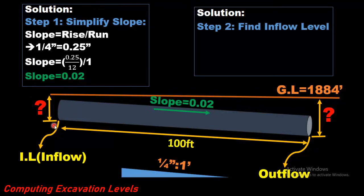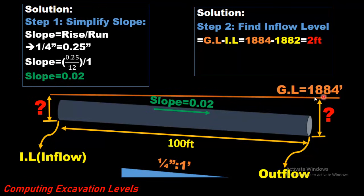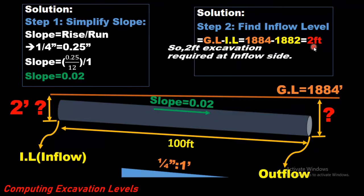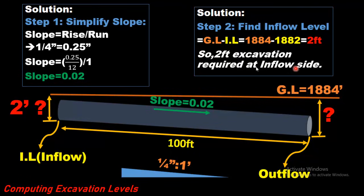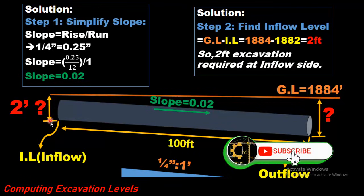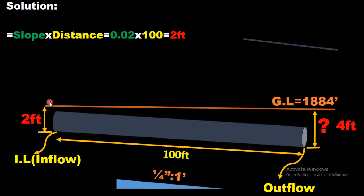Step 2 — Find the inflow excavation level. The invert level is already given. Excavation depth equals ground level minus invert level. Ground level is 104 and invert level is 102, so 104 minus 102 equals 2 feet. Therefore, 2 feet of excavation is required at the inflow side.